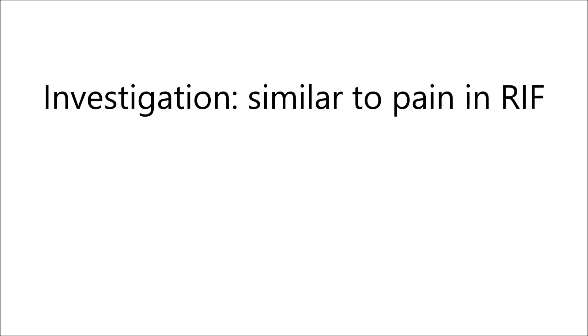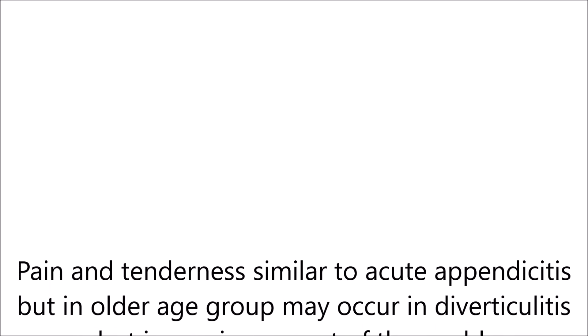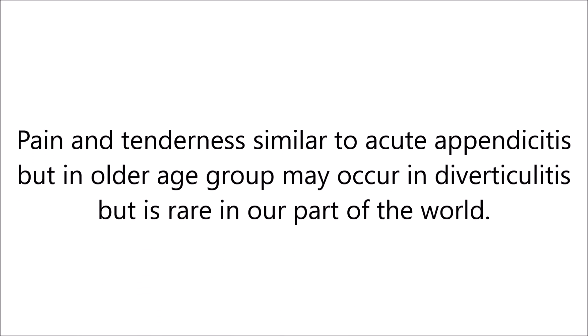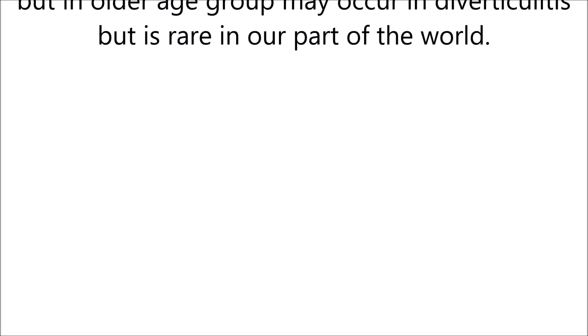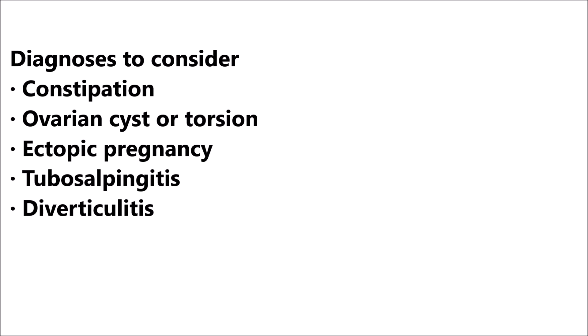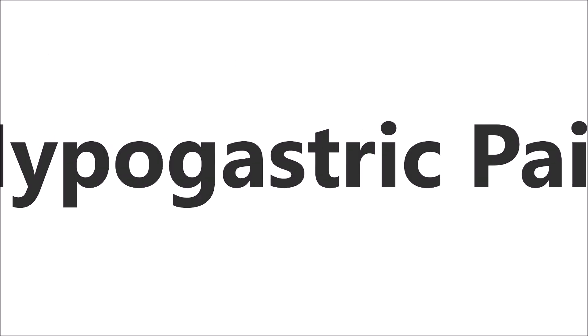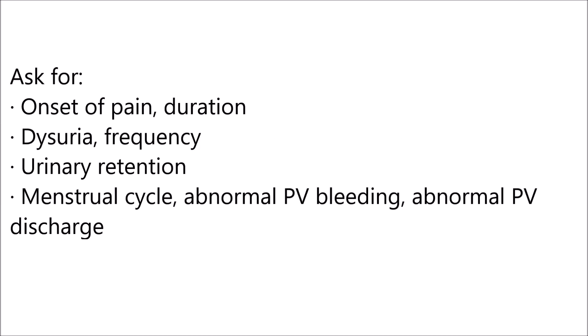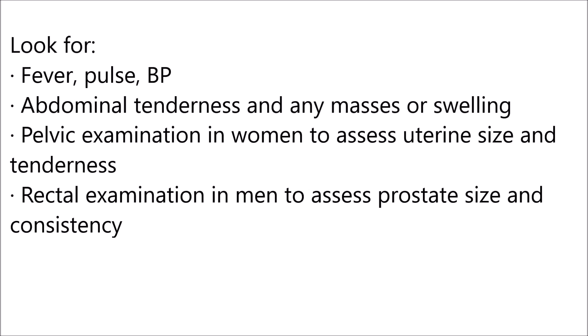Pain and tenderness similar to acute appendicitis but in an older age group may occur in diverticulitis, though it is rare in our part of the world. The differential diagnoses could be constipation, ovarian cyst torsion, ectopic pregnancy, tubo-ovarian abscess, and diverticulitis. In case of hypogastric pain, ask for onset of pain, duration, dysuria, frequency, urinary retention, menstrual cycle, abnormal PV bleeding, and abnormal PV discharge. Look for fever, pulse, blood pressure, abnormal tenderness, and any masses or swelling. Pelvic examination in women to assess uterine size and tenderness; rectal examination in men to assess prostate size and consistency.